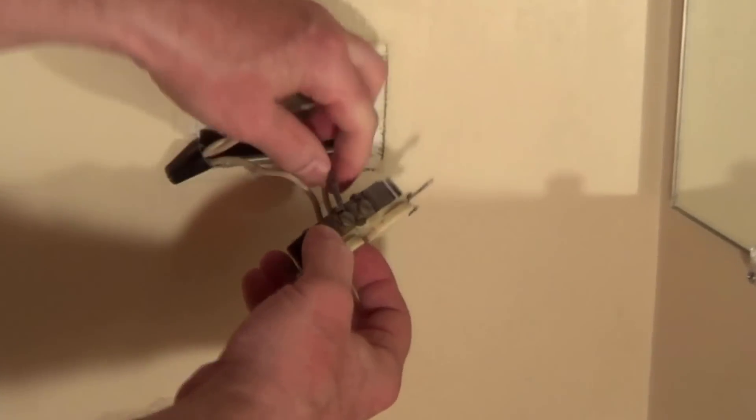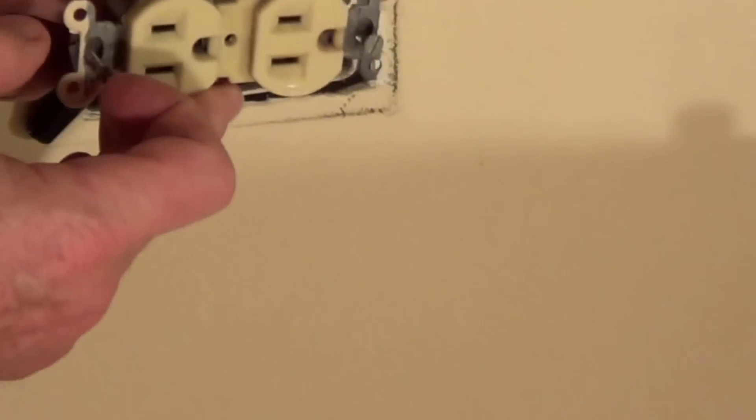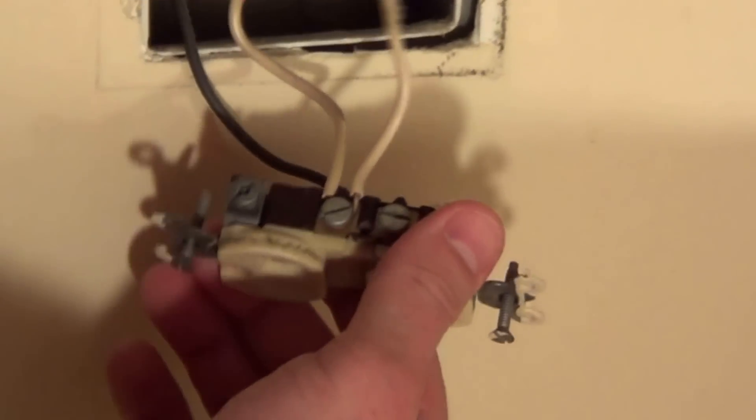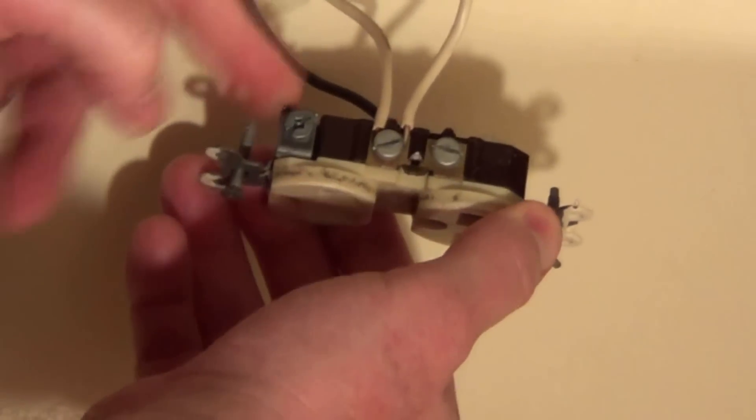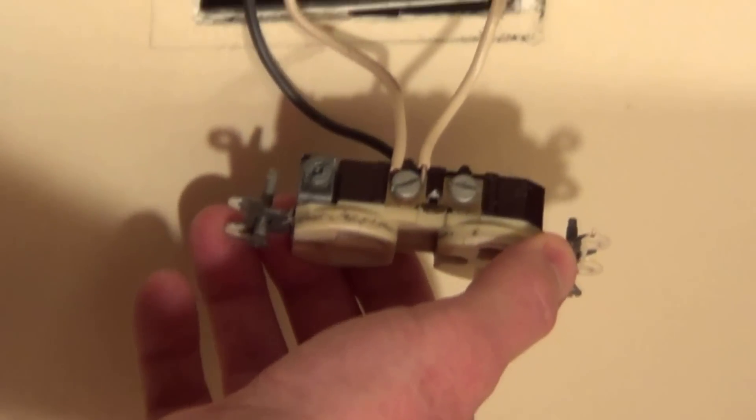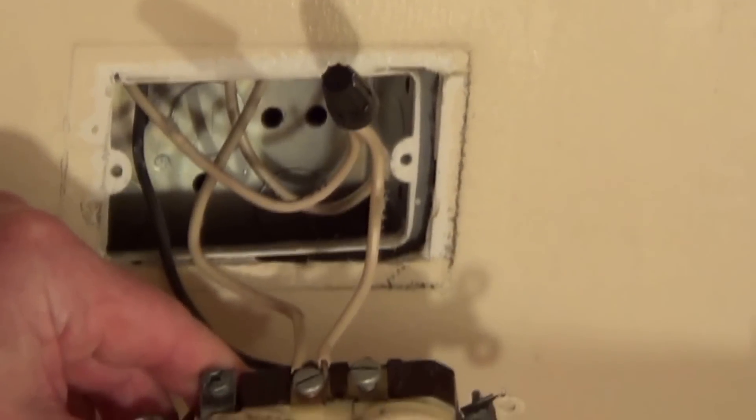Here we go. We've got one hot coming into the side - you can see how old this outlet is - and then we've got a neutral wrapped out on the other side. So I'll disconnect these two screws and then I'll show you the steps to connect the GFI.